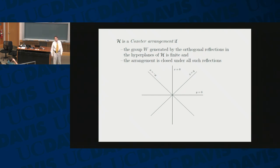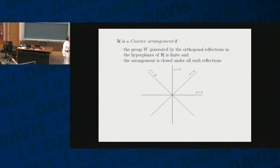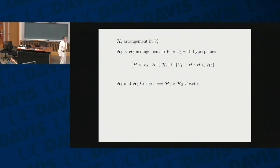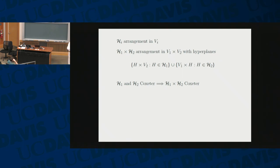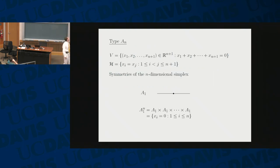The other thing I talk about is Coxeter arrangements. We'll be talking about types A, B, C, D. So, close on the orthogonal reflections in the hyperplanes, and the group should be the finite group you generate. You can also take the product of two hyperplane arrangements. For Coxeter arrangements, this product gives you another Coxeter arrangement. If you look for the irreducible Coxeter arrangements under this product, that's exactly what we have.